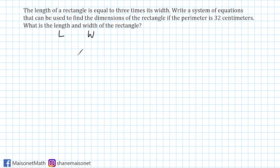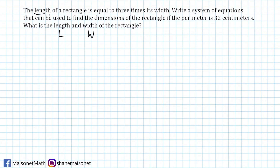After you have declared your variables, what we have to do is express what we know about the problem algebraically. Sometimes they might straight out give you an equation, and other times you have to use a little bit of inference or prior knowledge. In this problem, they are saying that the length of a rectangle is equal to three times its width, which we can express algebraically as L equals 3W. So right away, we have one of our two equations in the system.